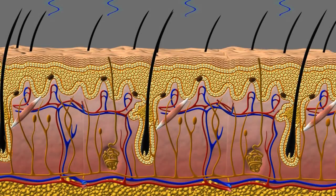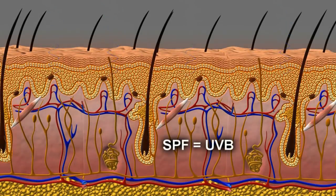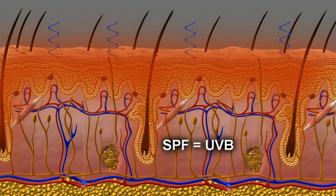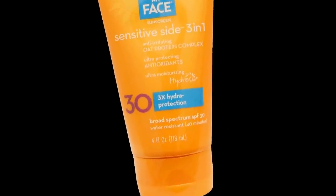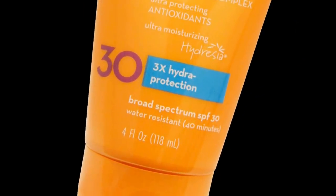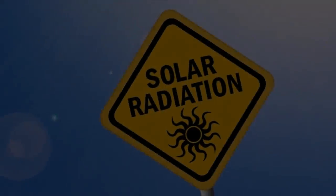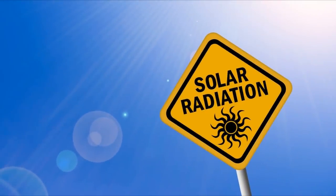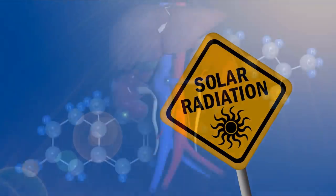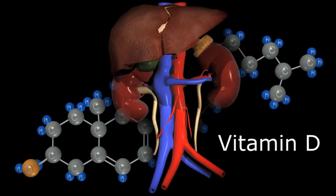Remember, SPF only refers to the product's ability to block the UVB rays and prevent the physical effects of a sunburn. To maximize skin protection, you should select a sunscreen product labeled Broad Spectrum, which indicates that it is formulated to block both the UVA and UVB rays. Now, we don't want you to walk away thinking that the sun is all bad — in fact, as you will see in the video on Vitamin D on this same YouTube channel, a few minutes of unprotected sun exposure during midday is actually quite beneficial.